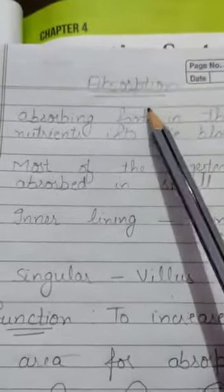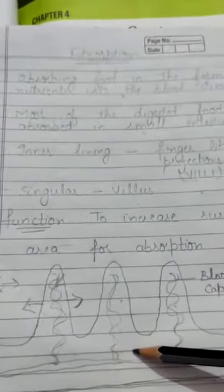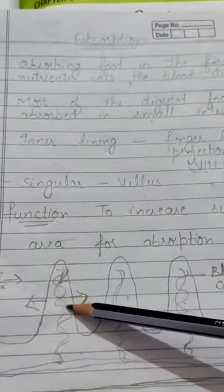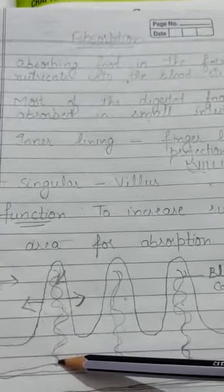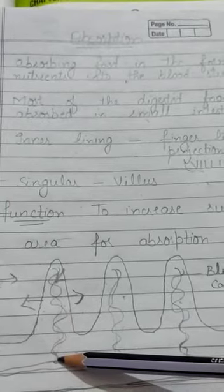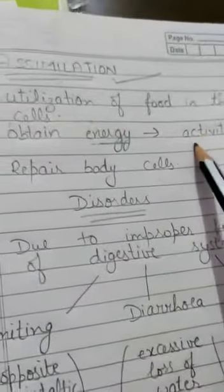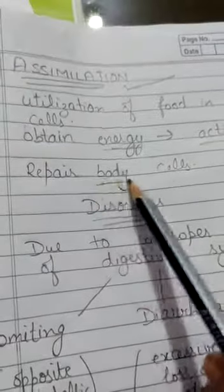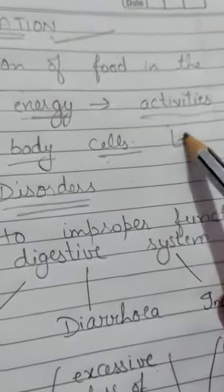To recap: absorption is the process in which absorbed food in the small intestine produces nutrients which go to blood vessels, then to each and every part of the body, producing energy that helps to do many activities and also helps to form new body cells.